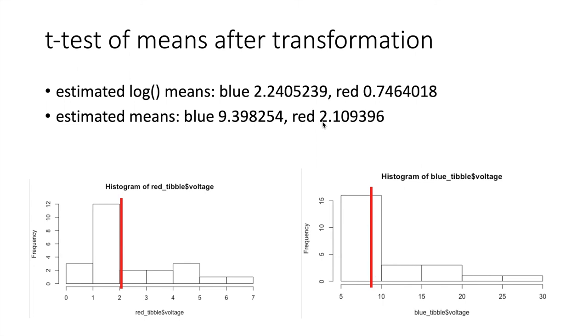The estimated mean for red is 2.1, and we can see at least with this very long tail here that this seems like a reasonable location for the peak of this histogram as well.